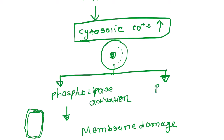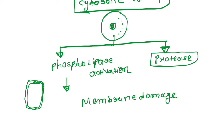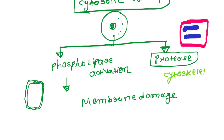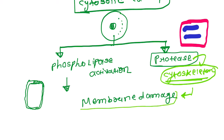The increased calcium also activates proteases — enzymes that lyse the proteins of our cell. Just like a skeleton supports our body, cytoskeleton proteins support the cell. These protease enzymes digest and lyse the cytoskeleton proteins. Proteins present in the membrane are also damaged, so membrane lysis also occurs.